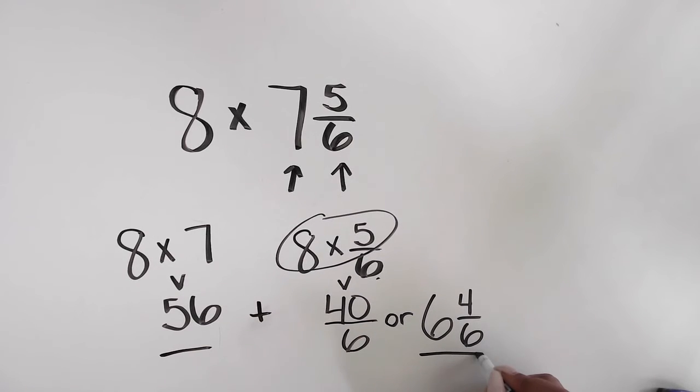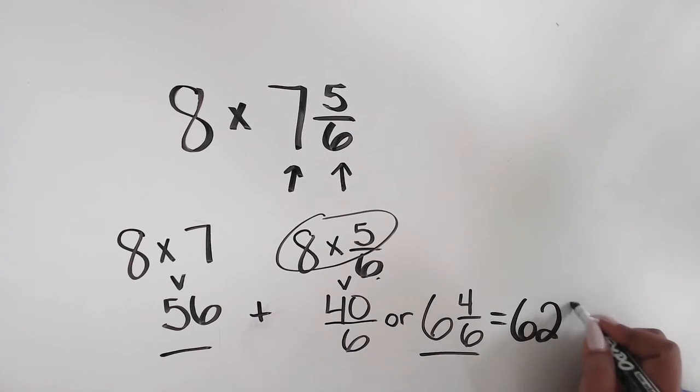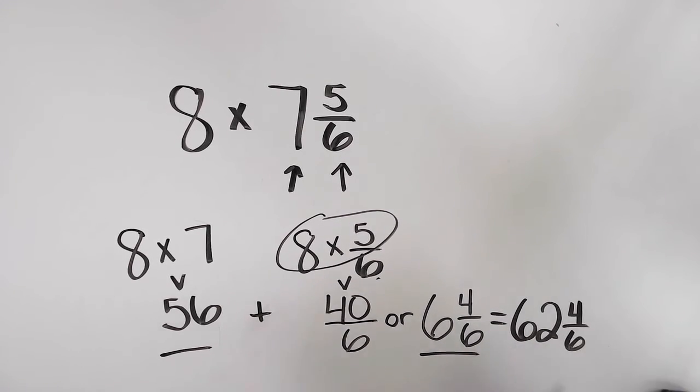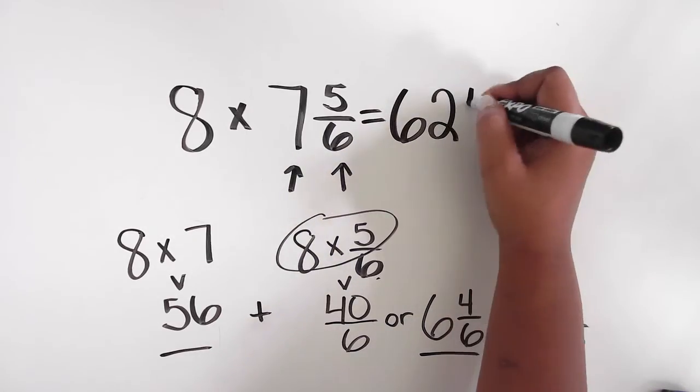Finally, add 6 and 4/6 to the 56. 56 plus 6 and 4/6 equals 62 and 4/6.